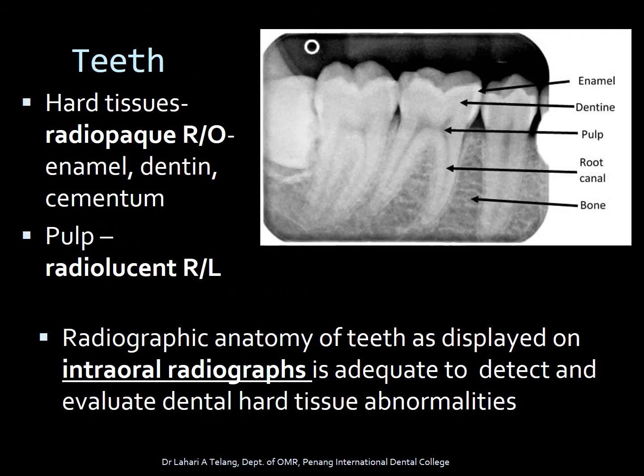Teeth are hard tissue structures and hence they are radiopaque. The radiopaque parts of the teeth are the enamel, the dentine, and the cementum. The difference between cementum and dentine is hard to differentiate because their mineral content is nearly the same. The pulp, on the other hand, is the radiolucent part of the tooth, located in the center portion of the tooth. It contains soft tissue, nerves, and blood vessels, which explains why it is radiolucent.